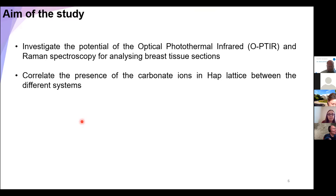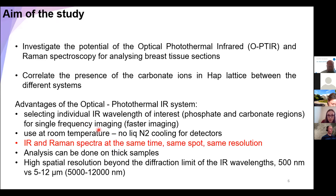That's why we would like to use the Mirage system to discriminate the calcification with carbonate ions in their hydroxyapatite crystal, and compare the different systems in our lab with the photothermal system. As Mustafa already described, we have a lot of advantages with this new technology. In particular, with the quantum cascade laser, we can select individual IR wavelengths of interest — such as phosphate and carbonate — and it is faster than with a global thermal source. Most importantly, we can use IR and Raman spectroscopy at the same time on the same spot, so we can finally be confident that we have carbonate substitution in our microcalcification.